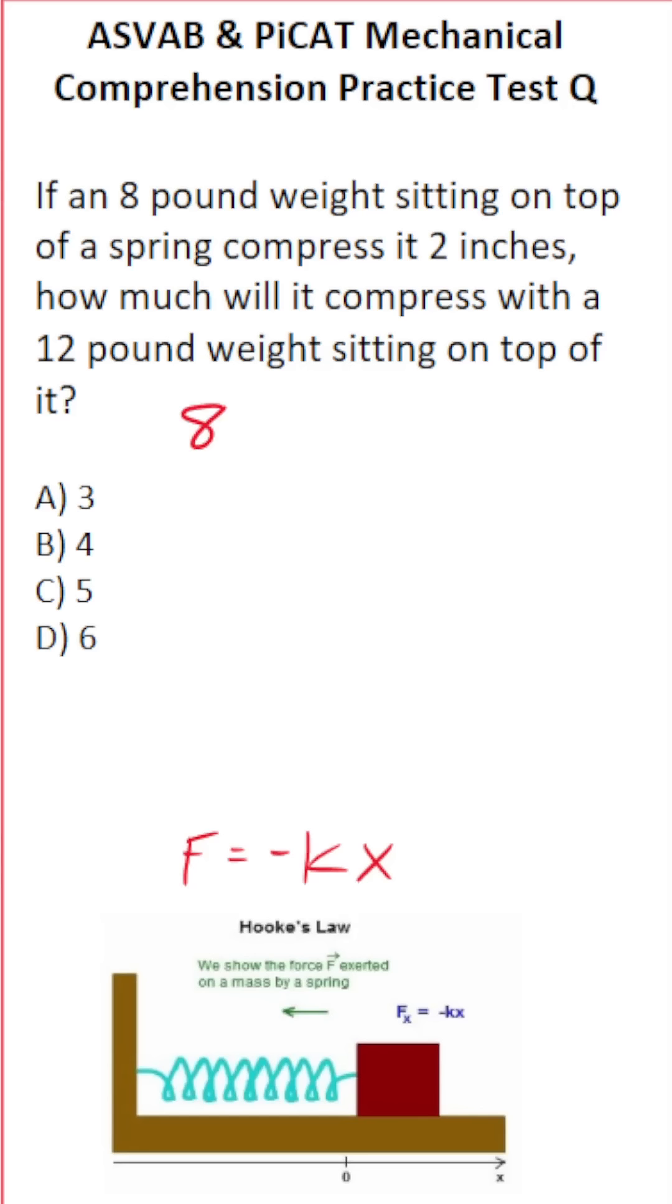An 8-pound weight compresses the spring 2 inches; that's proportional to the amount the 12-pound weight compresses the same spring. Since we don't know how much it compresses, we'll call that x for unknown.